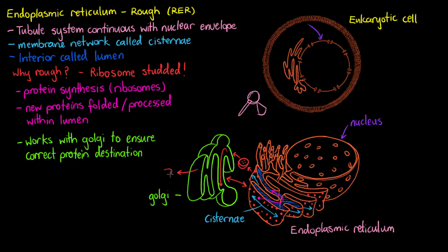So we'll draw a secretory vesicle, which the Golgi apparatus is going to create, which is going to contain the proteins that are eventually going to leave the cell.